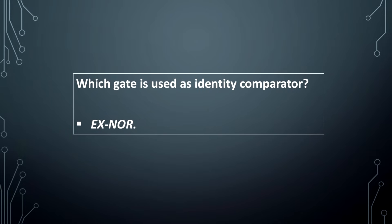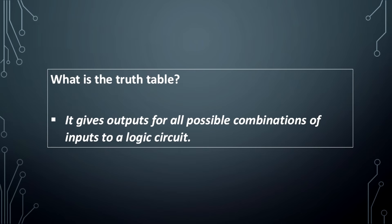Which gate is used as an identity comparator? The XNOR gate is used as an identity comparator.